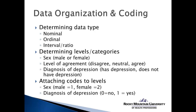Examples of this might be sex or gender — that's a nominal scale data variable with two categories: male or female. If we're determining someone's level of agreement on a particular statement, they might agree, feel neutral, or disagree, giving us three levels within that variable, which could be considered categorical or ordinal. We might also have a diagnosis of depression, where the subject either has depression or does not — an example of a categorical or nominal scale variable.